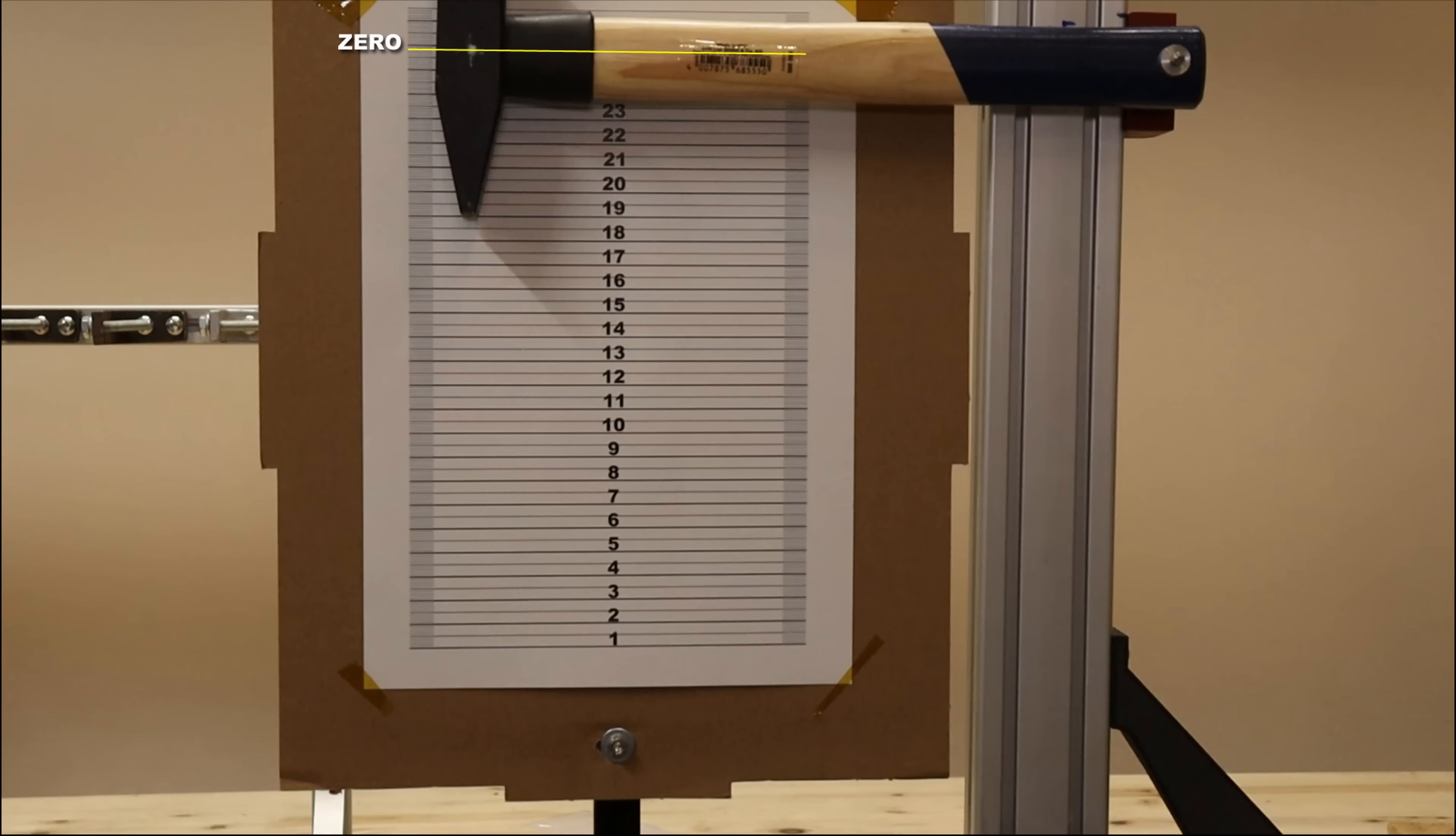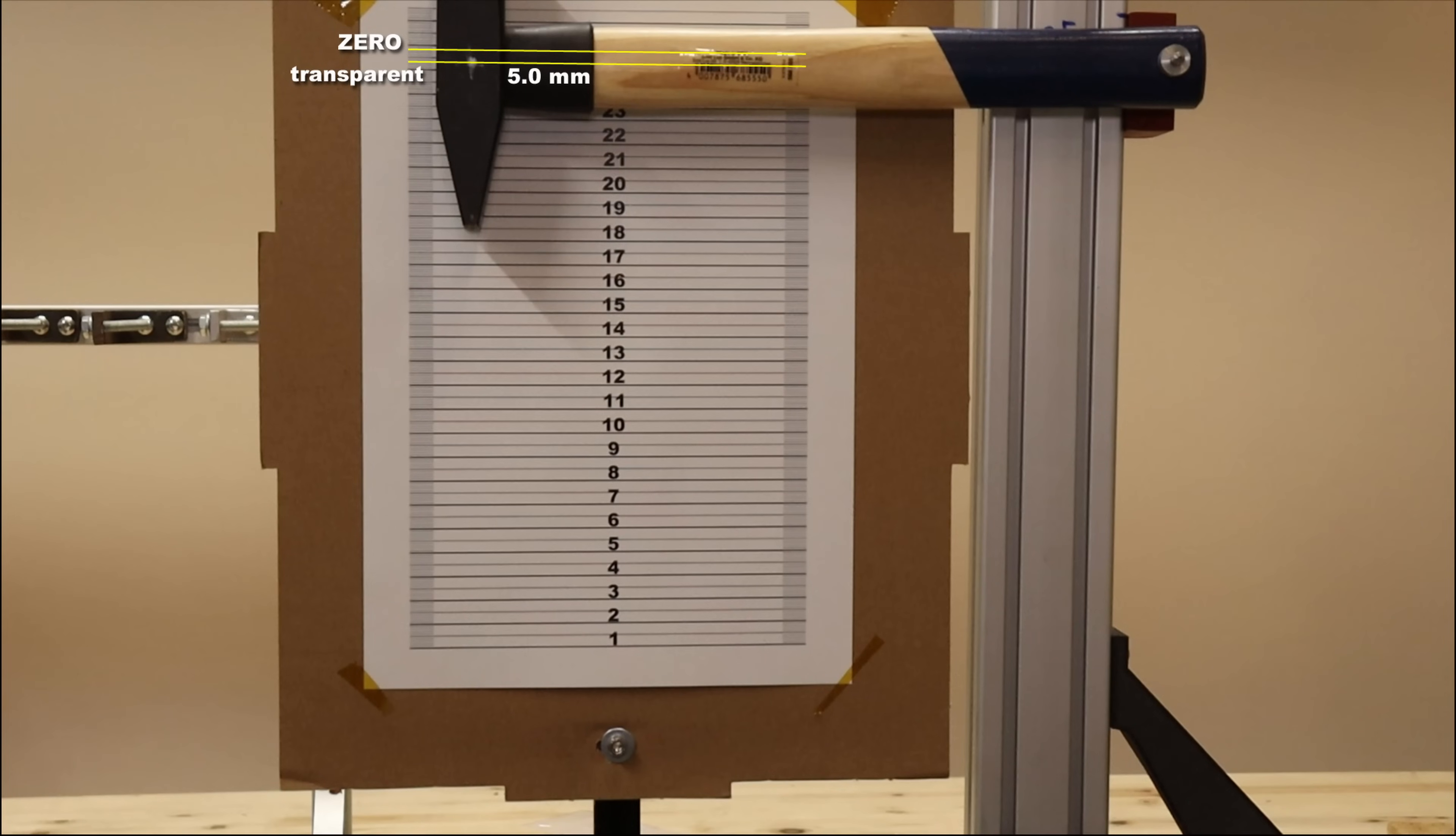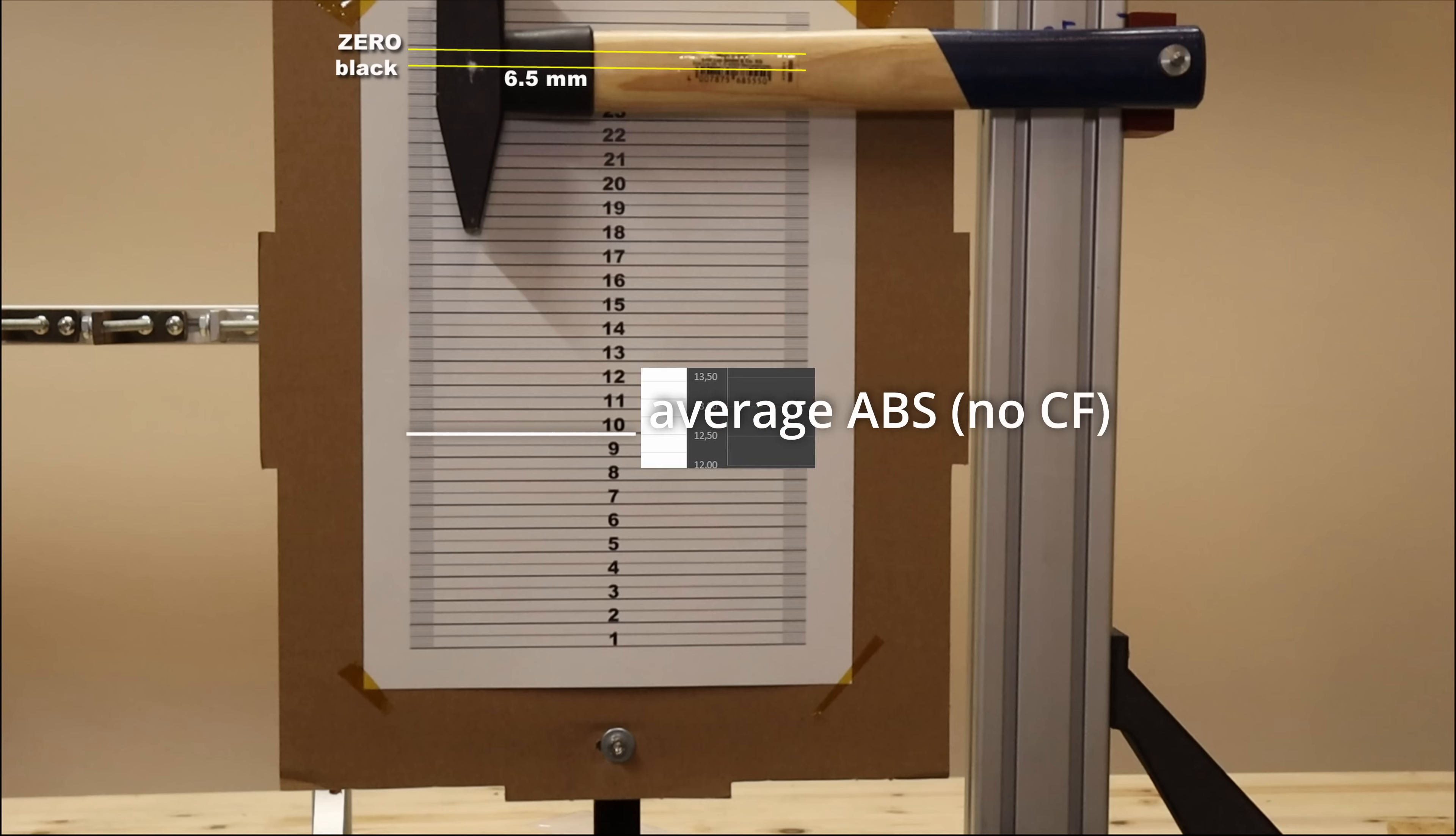This is the zero position of the hammer, and this is after breaking the white test objects, after the transparent one, and after the black one. So between these three, the black is toughest, but all three are very brittle materials. This may be the only reason why you would like to choose the ABS instead of the polycarbonate.